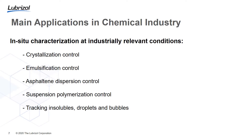Now let's look at main applications of these probe-based measurements in the chemical industry at industrially relevant conditions: crystallization and emulsification control especially in pharmaceutical industry; asphaltene dispersion control in oil and gas — asphaltenes, called the cholesterol of the oil industry, can clog pipelines through deposit formation; suspension polymerization; and generally tracking particles, droplets, and bubbles.